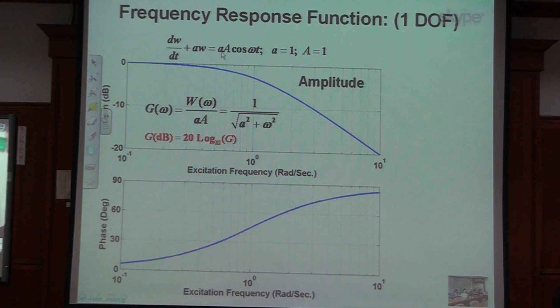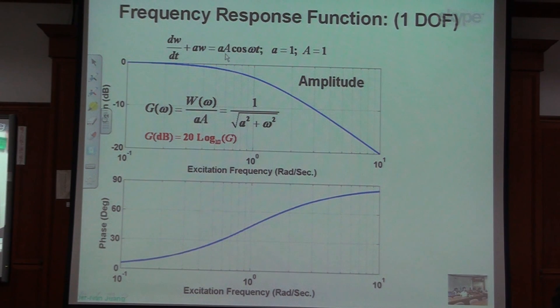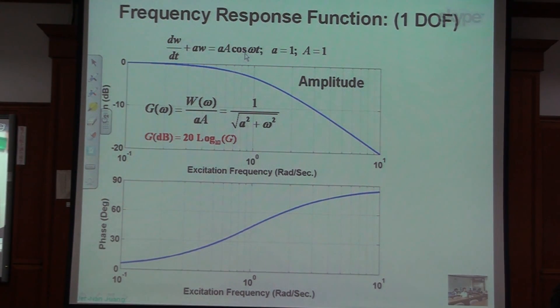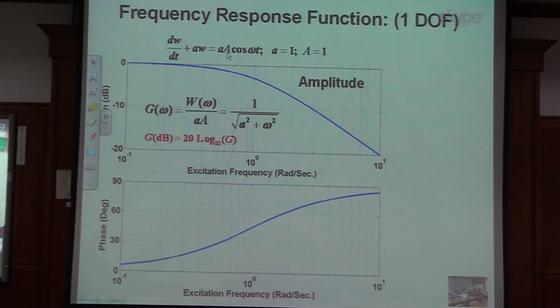So G omega defined to be your W omega divided by A. A is your amplitude of your input functions. See? A, small a, and capital A, that's just nothing but your amplitude of your input functions. Your harmonic, so harmonic excitation amplitude is A. So we'll study...